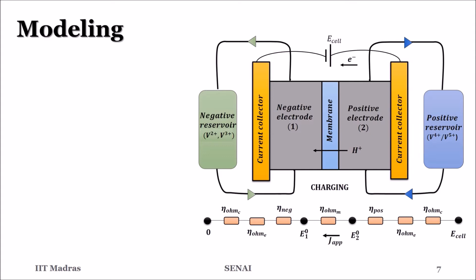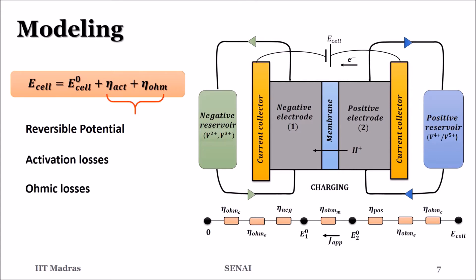For charging the electrolytes, we need to apply a minimum potential E0 cell corresponding to the reversible potential. However, because of the activation and ohmic losses which accompany the charge transfer, we need to supply higher potential to overcome these losses.